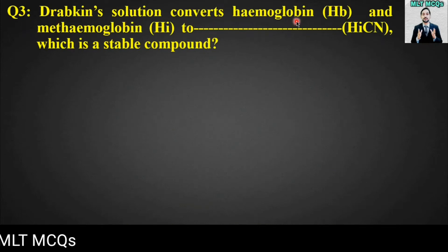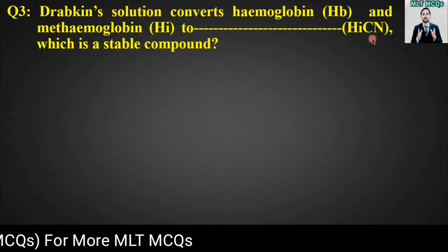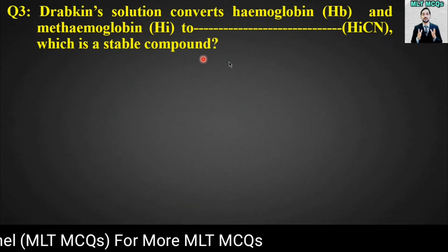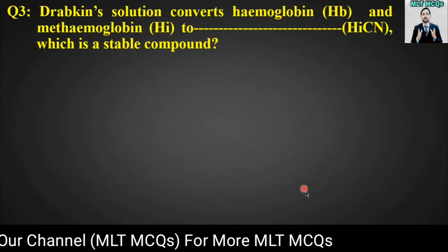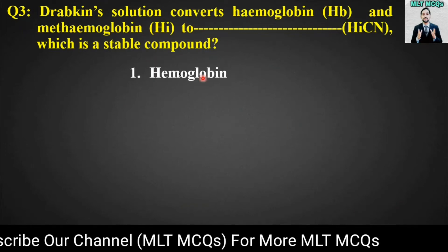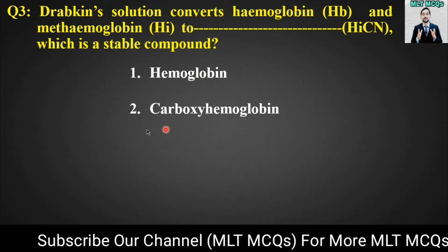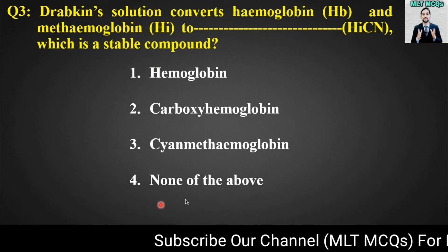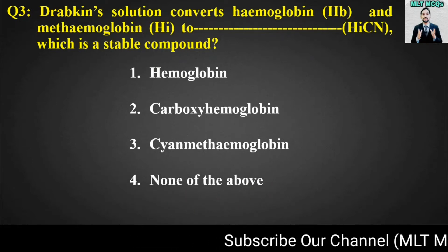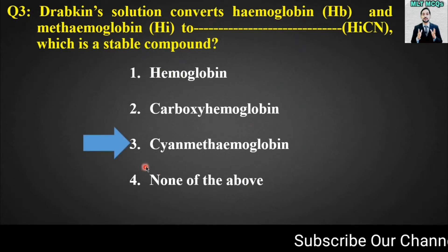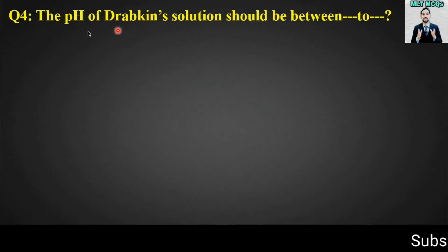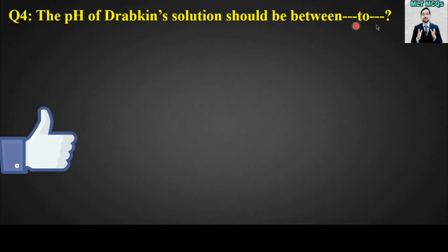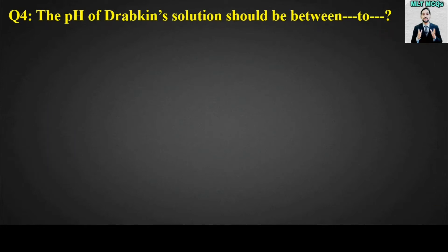MCQ number three: Drabkin's solution converts hemoglobin (Hb) and methemoglobin (Hi) to a stable compound HiCN. What is the name of that stable compound? Options are: hemoglobin, carboxyhemoglobin, cyanmethemoglobin, or none of the above. The right answer is option number three — cyanmethemoglobin.